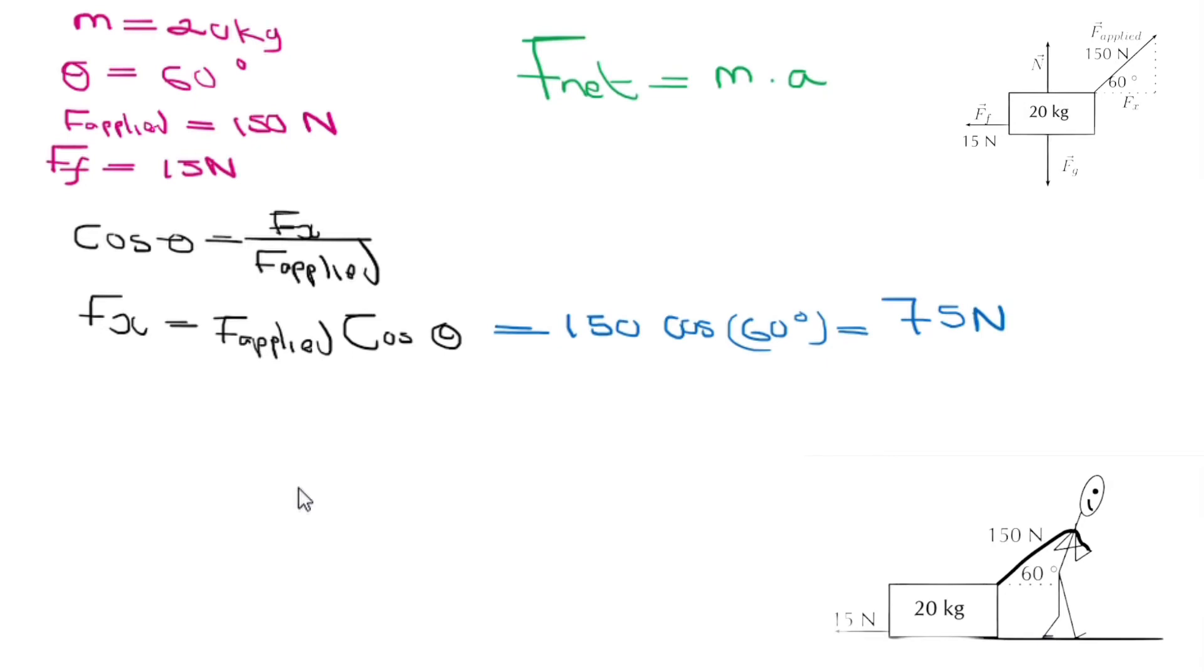Let us calculate the acceleration. If Fnet equals mass times acceleration, Fx subtracting the opposing force which is the frictional force can be equated to mass and acceleration. We have 75 subtracting 15 newtons equated to 20 times acceleration.